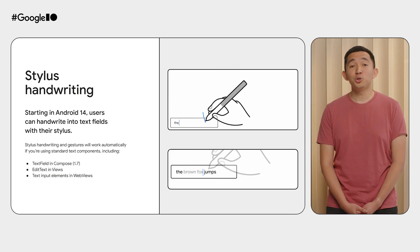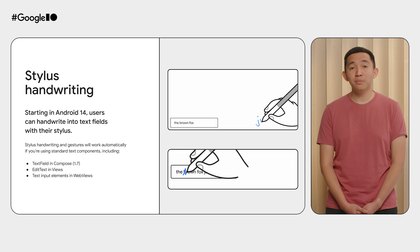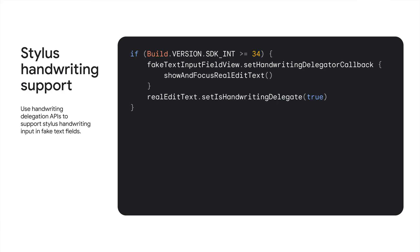There are two reasons you may need to do additional work to enable Stylus handwriting in your app. First, watch out if you're using a fake text field. If you have a UI element that looks like a text field but the actual text field is exposed only after it's tapped, you need to use the handwriting delegation APIs to support Stylus handwriting, as shown in the sample code. Stylus motion over the fake text input field view will cause the callback to be invoked, and that callback should trigger the transition to show and focus the real EditText.